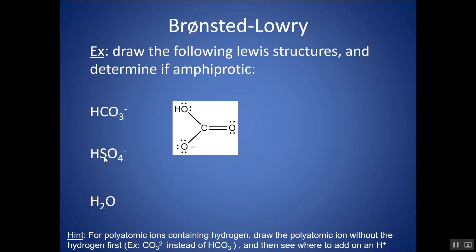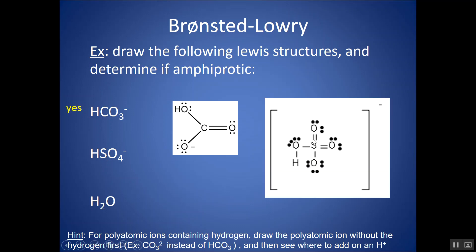For HSO4-: draw SO4 2- first. In one resonance structure it has two double and two single bonds, but all bonds are blends between single and double. Attach the H onto one of the negatively charged oxygens via a lone pair. This gives the hydrogen sulfate ion, which has multiple resonance structures. It can donate its H+ and turn back into SO4 2-, or it can accept another H+ on a lone pair and turn into H2SO4 sulfuric acid — so it is amphiprotic or amphoteric.